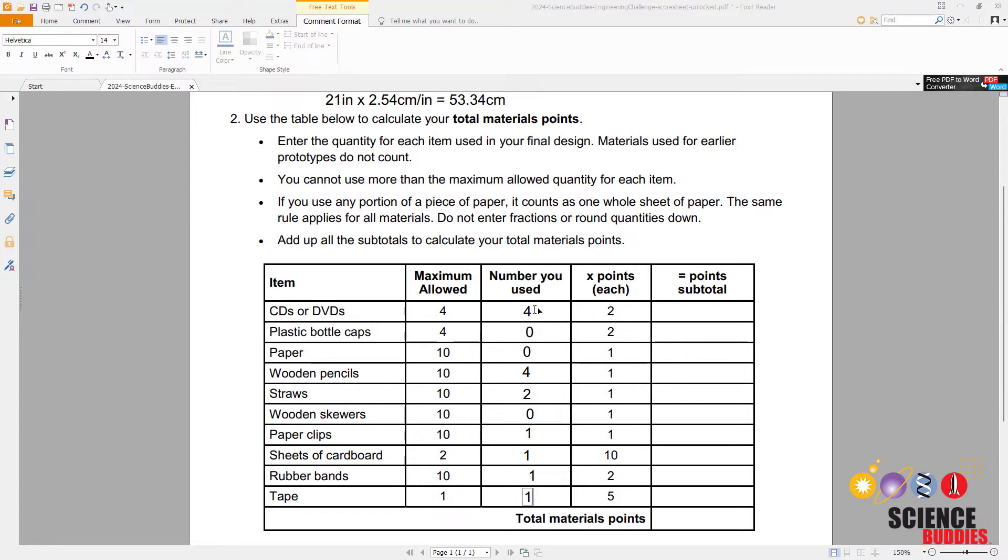Next you multiply the number of each material that you use by the point value for that material to calculate the subtotal for that material. So going through the table here: four CDs times two points each is eight. I did not use any bottle caps or paper so those will both be zeros. Four times one is four for the pencils. Two times one is two for the straws. Zero for the skewers. One times one is one for the paper clips. One times ten is a ten for the cardboard. One times two is a two for the rubber band, and then one times five is a five for the tape.